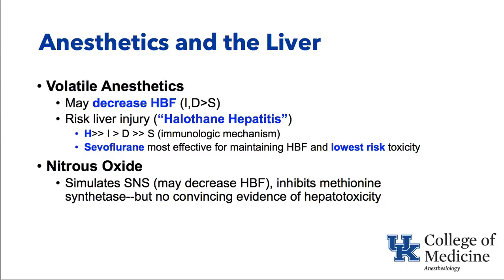Our volatile anesthetics — isoflurane, desflurane, and sevoflurane — can decrease hepatic blood flow, and there is a risk of liver injury from volatile anesthetics that was historically termed halothane hepatitis. Halothane is no longer used; it caused liver injury through an immunologic mechanism, with massive increases in aminotransferase enzymes seen postoperatively. With modern inhaled anesthetics, such cases are essentially only case reports — a very small number of volatile anesthetics causing this so-called halothane hepatitis.